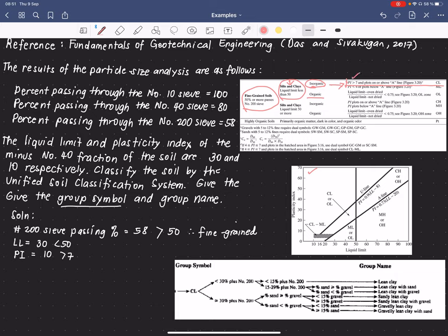Does it plot on or above A-line? We consider this plasticity chart and plot the given information here. The liquid limit is given to be 30, and the plasticity index of 10. So this is the data point, and it plots in the area of CL, or low plasticity, or low liquid limit clay. So it satisfies both conditions. Therefore, the group symbol is CL.